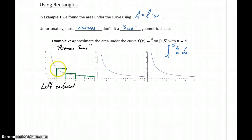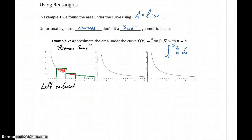What we can notice pretty quickly is that with each of these rectangular regions, we're including some area that's not actually under our curve. That's where this idea of approximation comes in — we're not going to get an exact result because we're including more area than we actually want to.